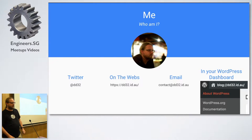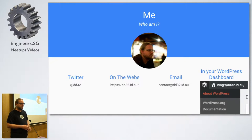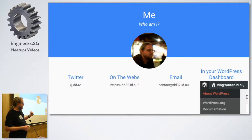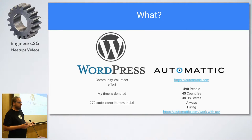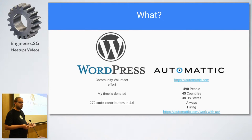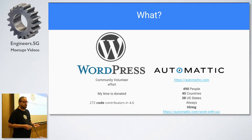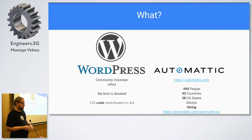My name's Dion. I am an Automattician — I work at Automattic, not the company behind WordPress, but the company behind WordPress.com. You can find me on Twitter, on the web, get my email, or even in your WordPress dashboard. I work on WordPress itself — I'm a lead developer. WordPress is a community-run volunteer organization, basically. Automattic sits off to the side; they hire me and donate my time 100% to the WordPress open source project. There's about 500 of us spread over 45 countries, no one in Singapore as far as I'm aware, but we'd love to change that.